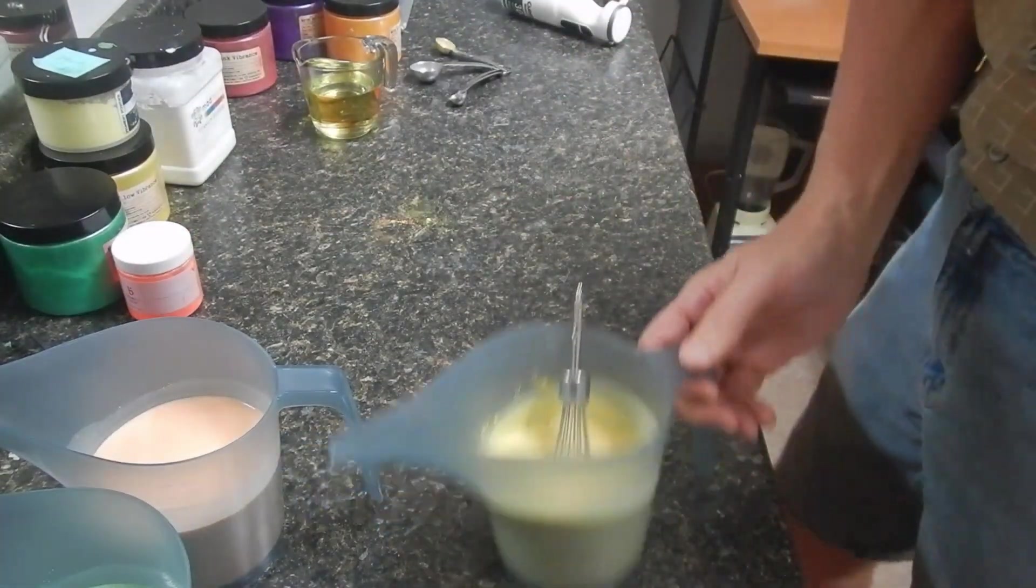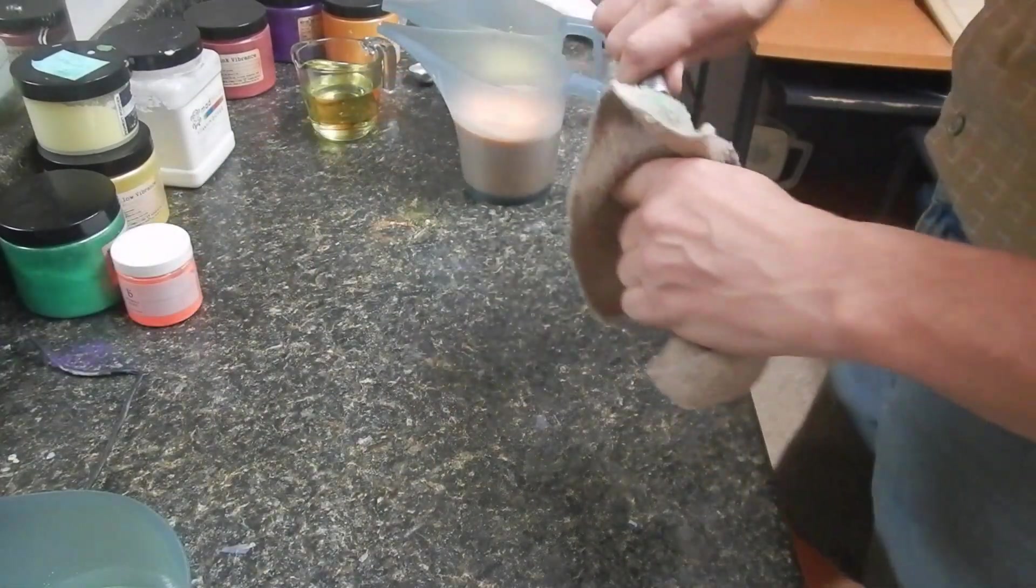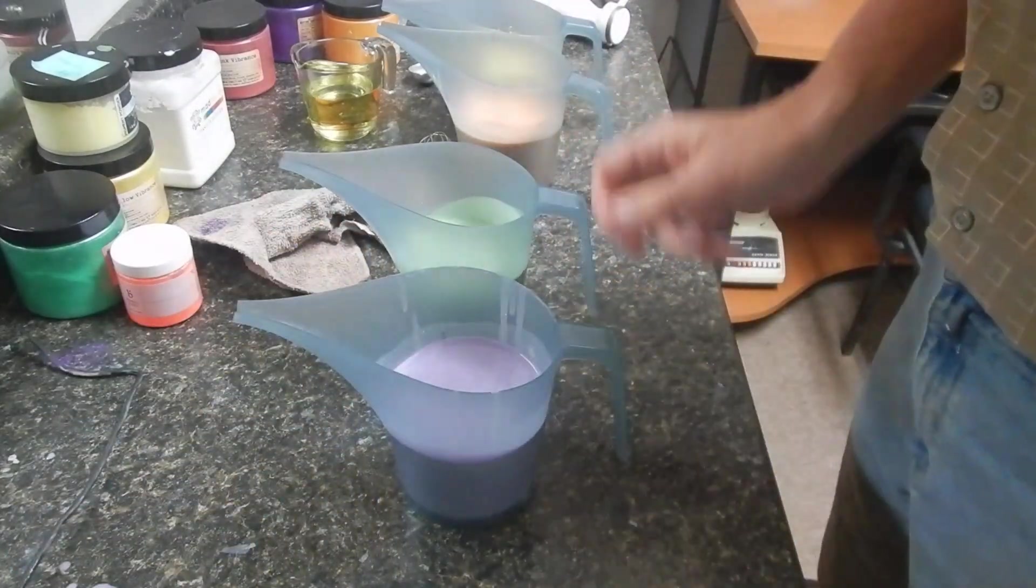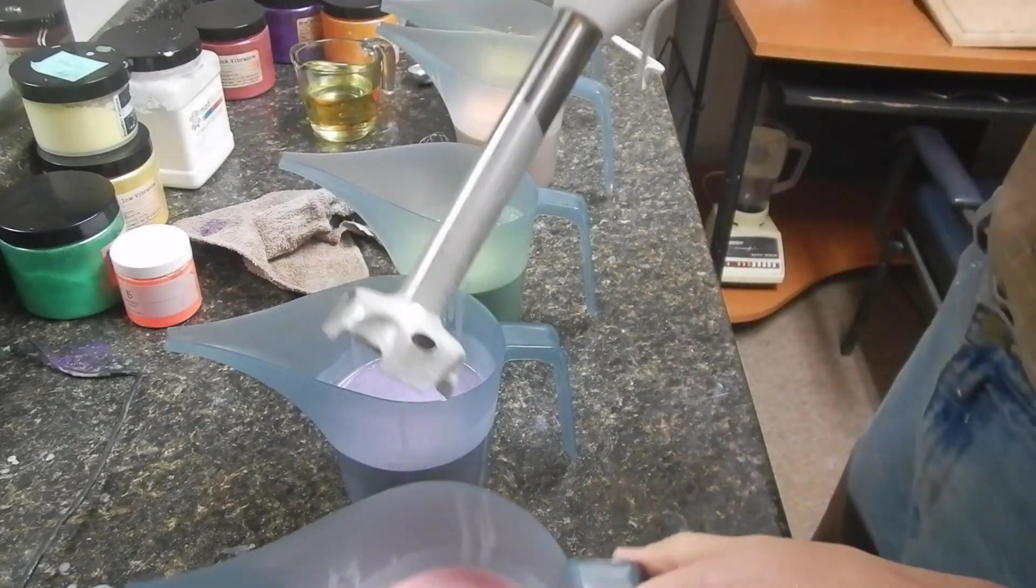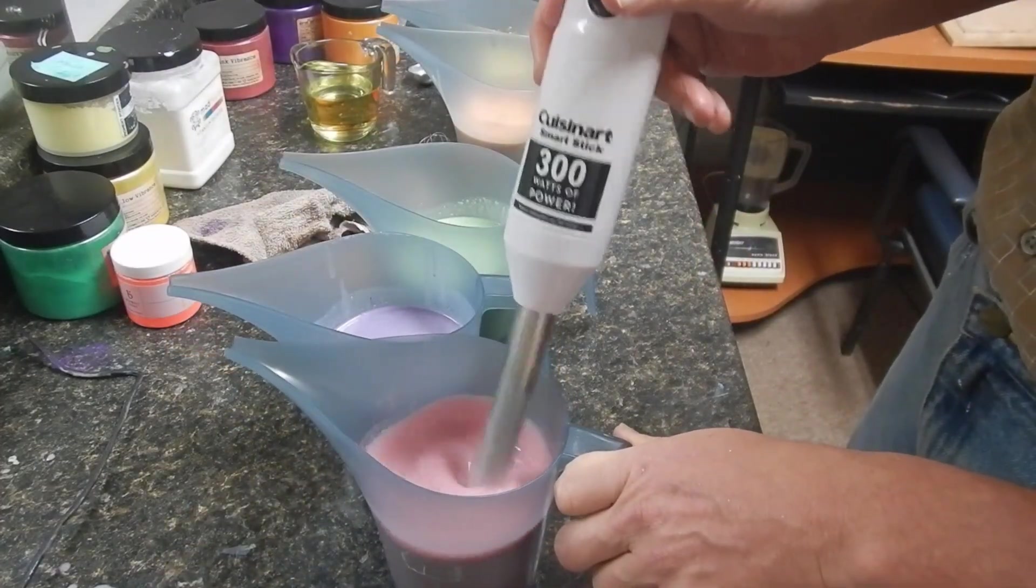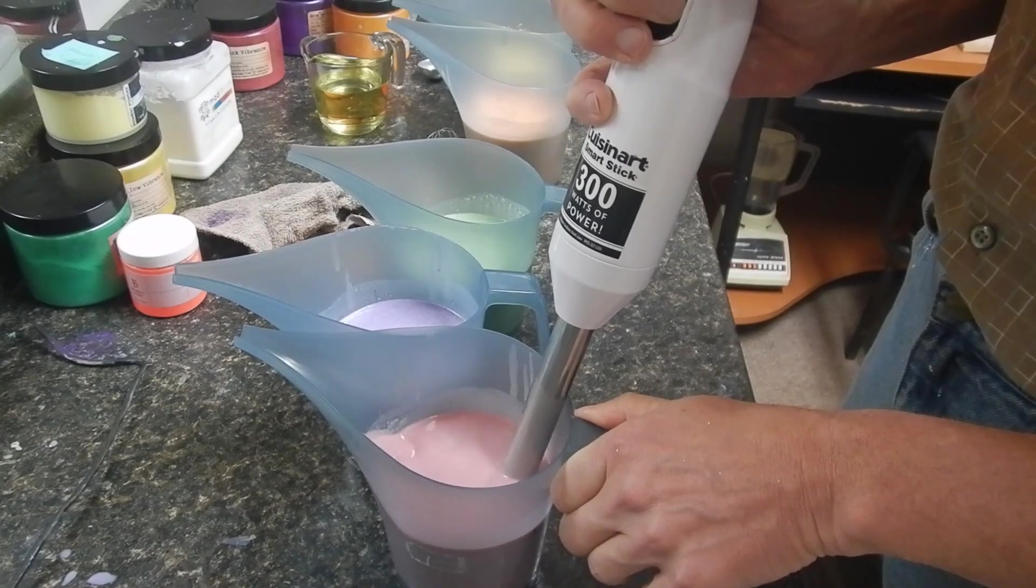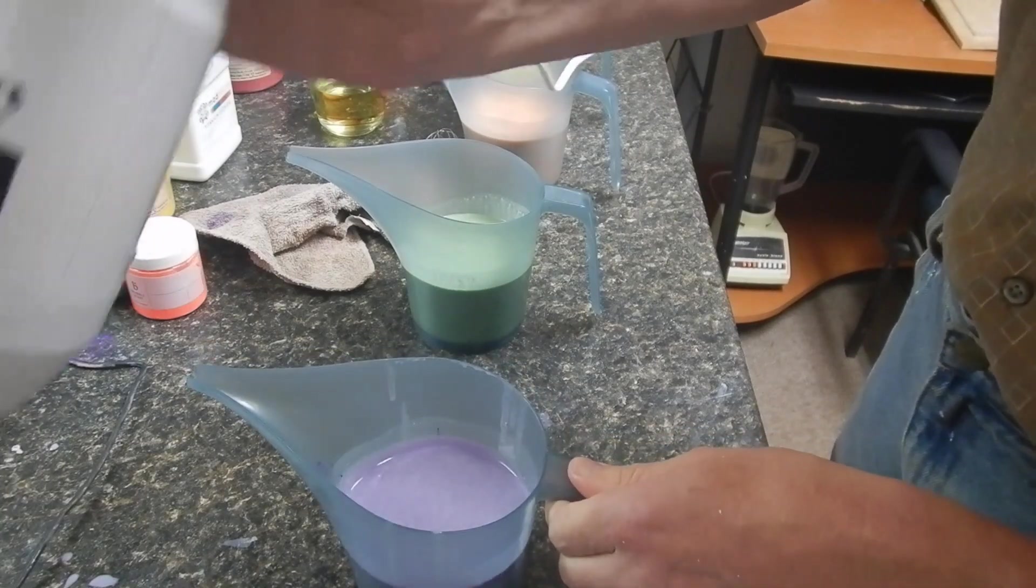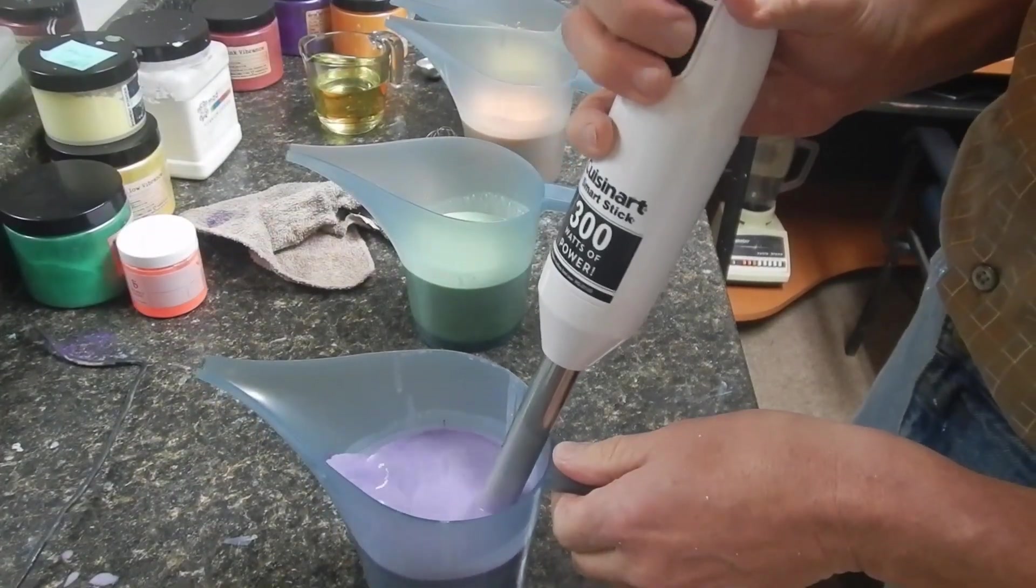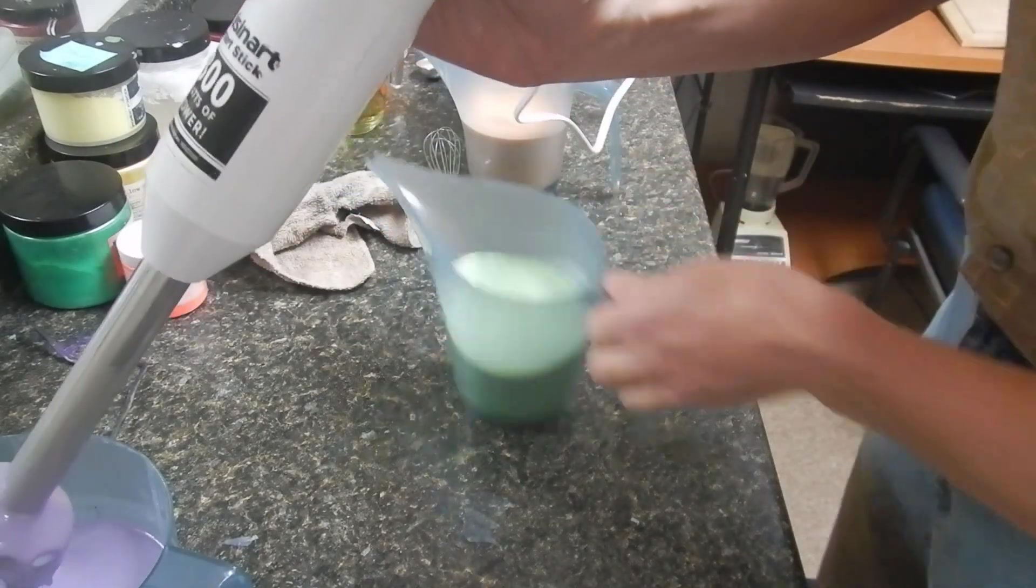Now I'm going to give each of these a quick hit with a stick blender to fully emulsify it. And for these last two, to mix those Neons in. So here is our pink, just a real quick hit to fully emulsify everything. Really just a few pulses. Our purple, the same. The green, the same.